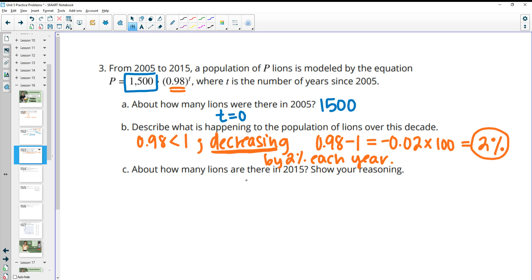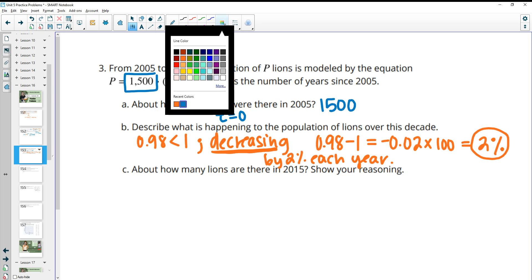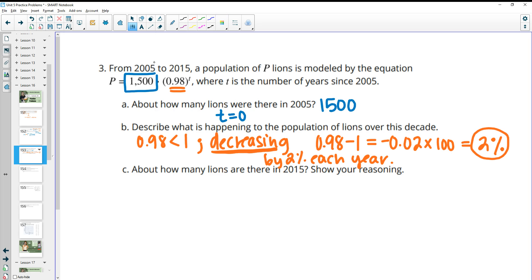About how many lions are there in 2015? Show your reasoning. So 2015 is 10 years after 2005, right? So we'll be plugging 10 into this equation. So we would be doing 1,500 times 0.98 to the 10. And when we do that, we get 1,225.61.